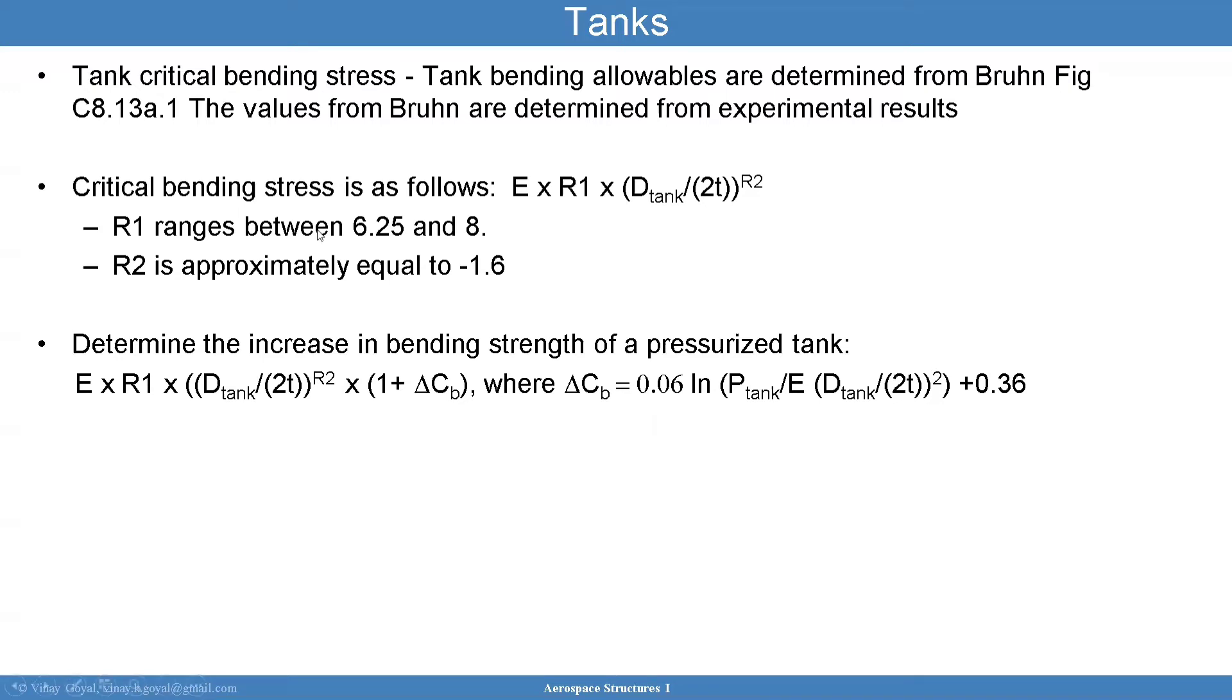To determine the increase in bending strength of pressurized tanks, use this formula. The pressurized tank will also increase bending strength. So you have one plus, and these are units of stress clearly. This is critical bending stress. It's the same formula as that but now you're increasing it by this delta cb. Delta cb can be found to be 0.06 times the natural logarithm of this ratio. P tank divided by 8 times and then this gives you non-dimensional so this works out very nicely. This is what you plug in to get the effects of pressure.